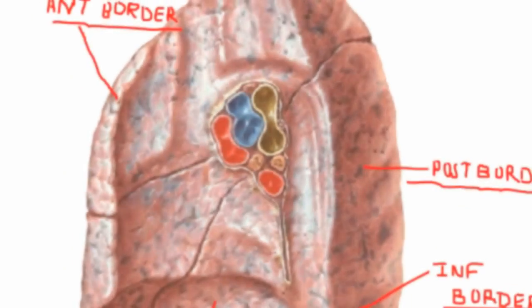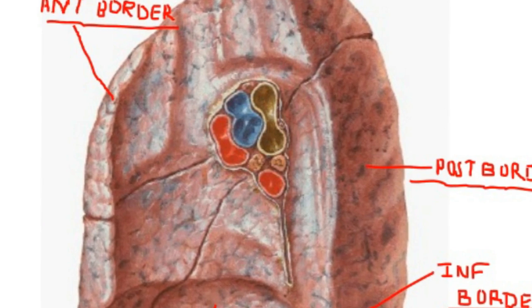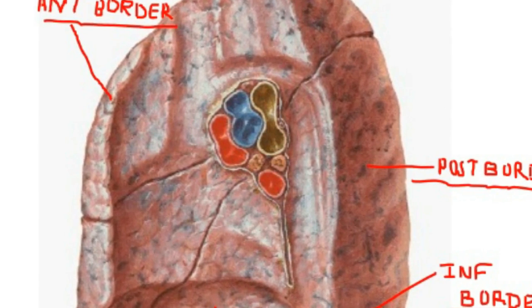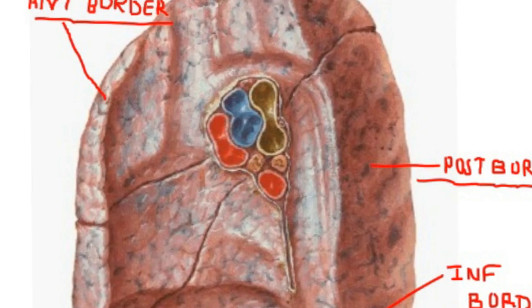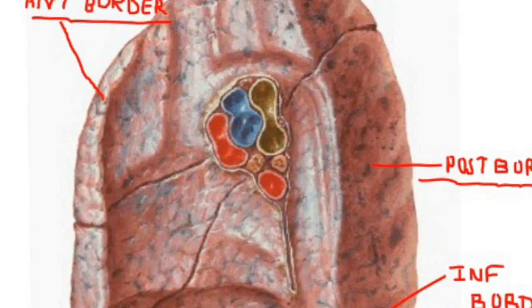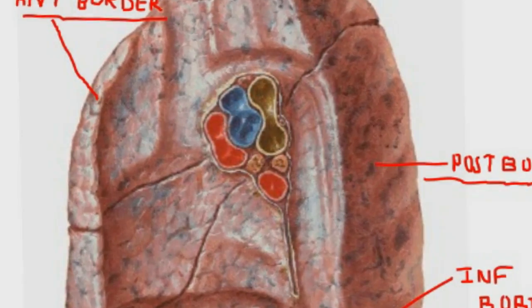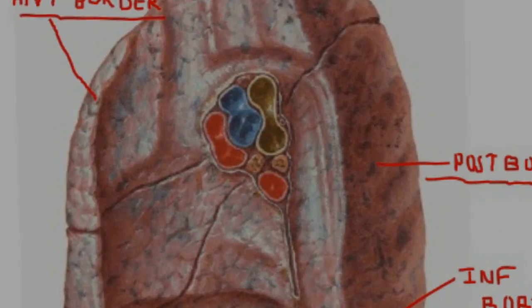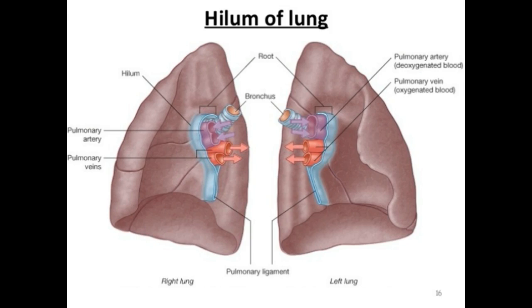Above the middle mediastinal area is the root of the lung, which connects the lung to both the trachea and the heart. The root of the lung is composed of several structures including the pulmonary artery and pulmonary veins, all of which are encased in a layer of pleura, which is a thin smooth layer of protective tissue.